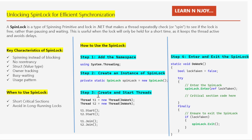Step number three: create and start threads. Here two threads, t1 and t2, are created and both run the DoWork method. The Start method begins execution of each thread, and then the Join method — t1.Join(), t2.Join() — ensures the main thread waits for t1 and t2 to finish before proceeding, making sure both threads complete before the program exits.